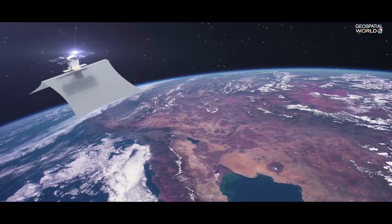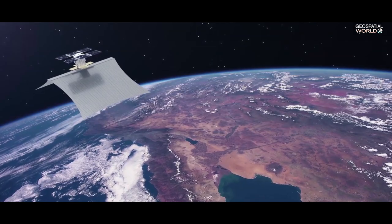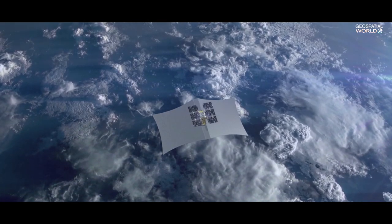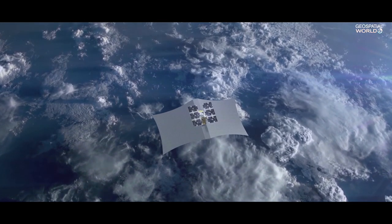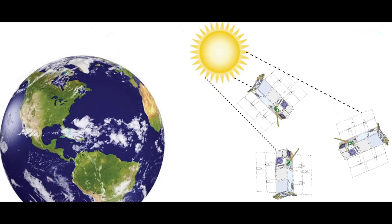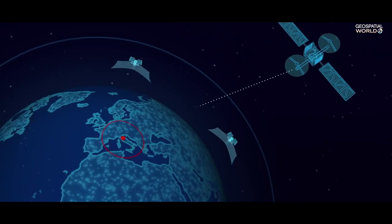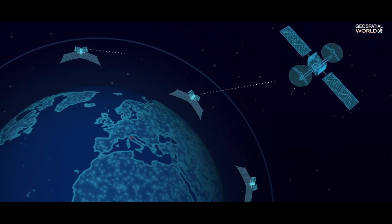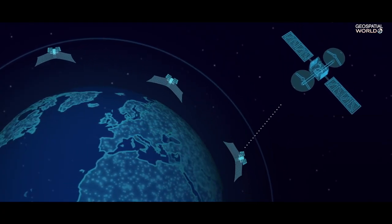SAR satellites are synthetic aperture radar satellites. Unlike traditional satellites that capture reflectivity from the Sun, SAR satellites shoot out their own energy source that reflects off the earth and is then received back by the satellite.